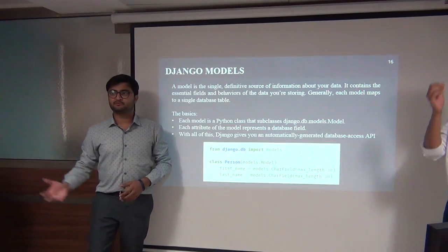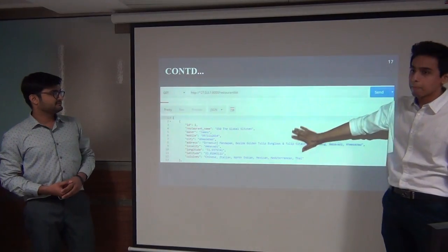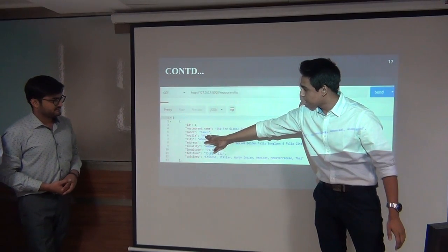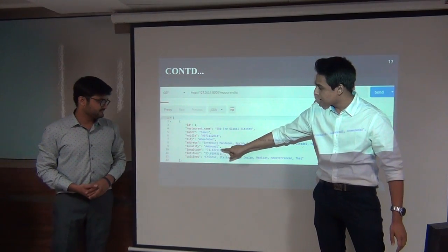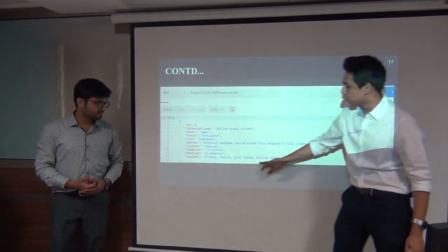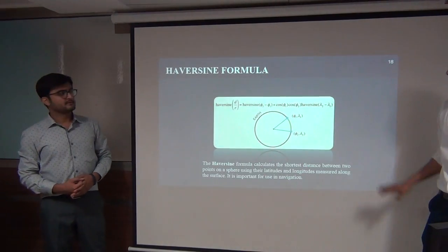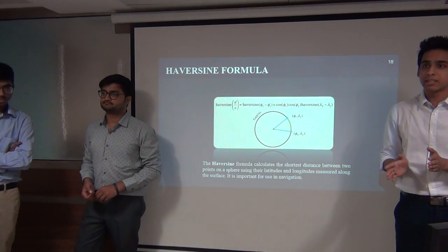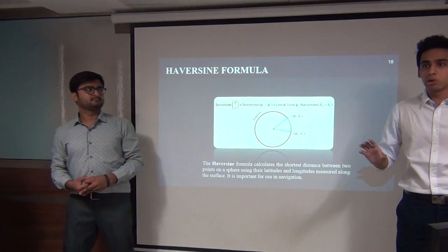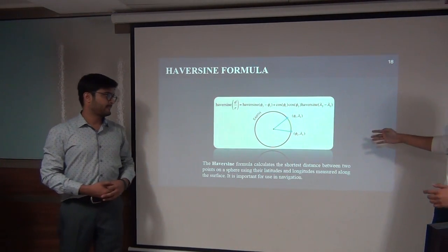The JSON data will be communicated via REST API. This is a sample showing the data structure: restaurant ID, restaurant name, owner, mobile number, city, address, locality, and the latitude and longitude required to find directions. The Haversine formula for finding the distance between two geolocations was specified in our SRS. We implemented it — you provide two sets of latitude and longitude, and it automatically calculates the distance and provides it to the form module.